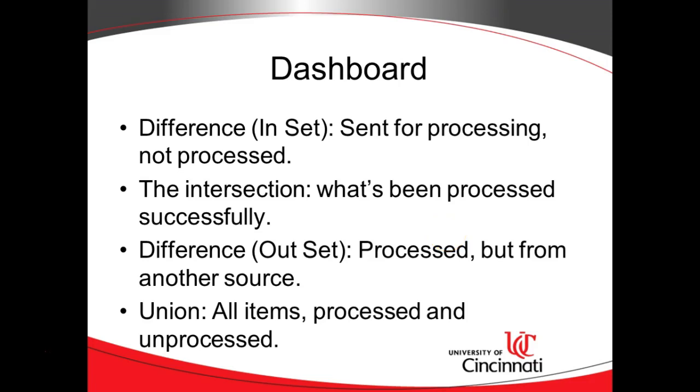So, difference has been sent for processing. Difference looking at the in set side means it's been sent for processing, but not processed. Intersection means it's been processed successfully. Difference looking at the out set side means it's been processed, but it came in through another source. In our example, that's not possible because the only source of data to the photo resizer at this point is the plant diary. But theoretically, we could have other things that need photos resized as well. Nothing says it has to be a plant photo. Now, the union of all these together is all items, both those that are processed and those that are not processed.